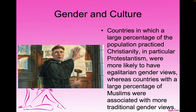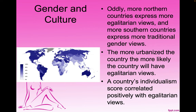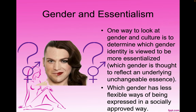Countries in which a large percentage of the population practiced Christianity, in particular Protestantism, were more likely to have egalitarian gender views, whereas countries with a large percentage of Muslims were associated with more traditional gender views. More northern countries express more egalitarian views, and more southern countries express more traditional gender views. The more urbanized the country, the more likely it will have egalitarian views, and a country's individualism score correlated positively with egalitarian views.